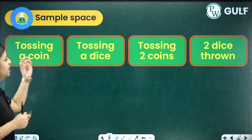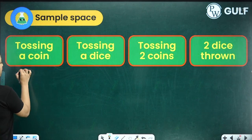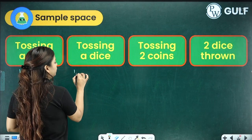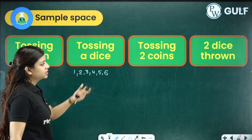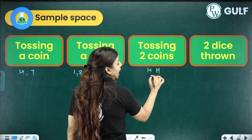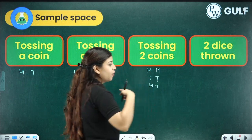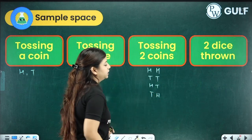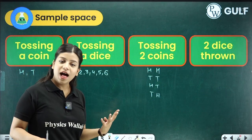When tossing two coins together, either we can get head on both, tail on both, head on one coin and tail on the other, or vice versa — tail on the first coin and head on the other. So when we toss two coins, there are in total four possible outcomes.